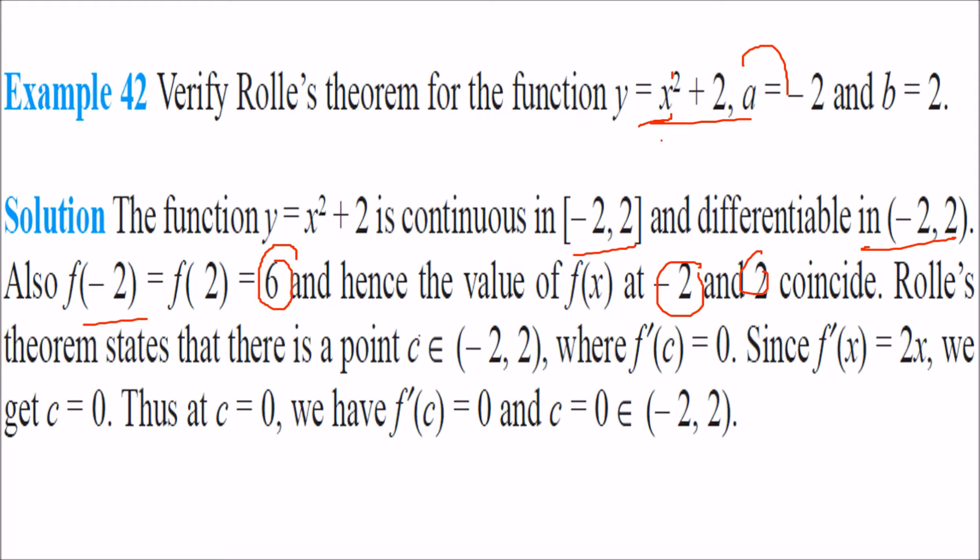Rolle's theorem states there has to be a point c in between this minus 2 and 2. There has to be some point such that the differentiation, the differential of this point at c should be 0. So differentiation of this is 2x and this is 0. So x is 0. So this c equal to 0 is the point.